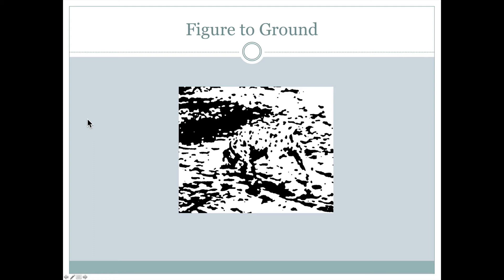So what do we mean by figure to ground? If you're taking a picture, the figure might be the thing you're pointing your camera at, like your friend or a monument or something like that. And the ground would be everything else in the background.